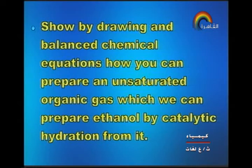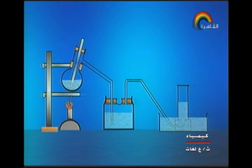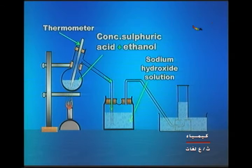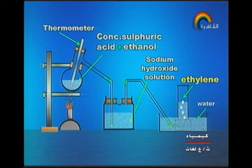Next type of question: show by drawing and balanced chemical equation how you can prepare an unsaturated organic gas from which ethanol can be prepared by catalytic hydration. As shown on screen, concentrated sulfuric acid and ethanol are heated; the produced gas passes over sodium hydroxide solution and is collected above water. It will be ethylene.